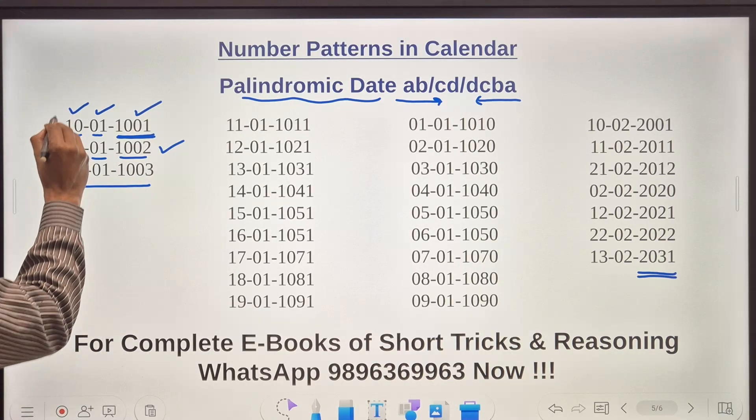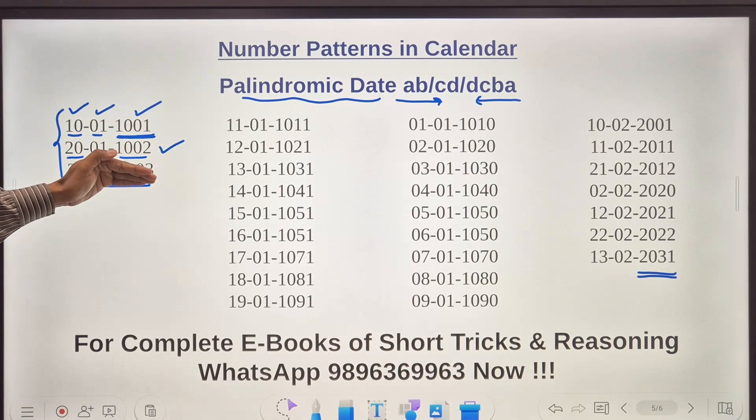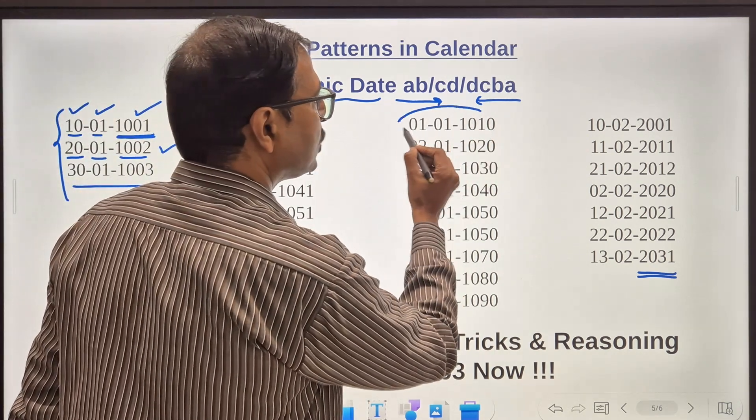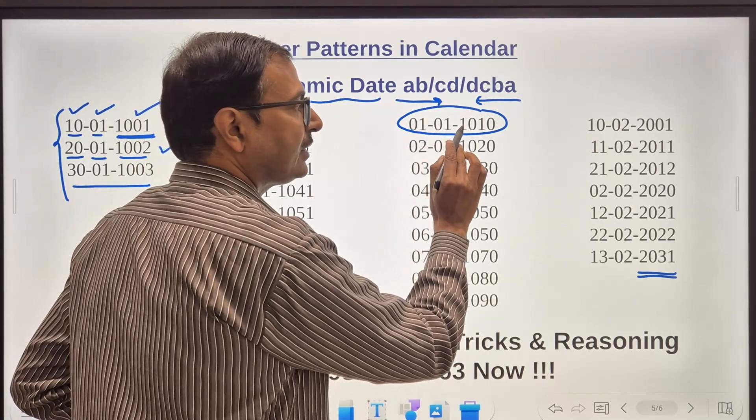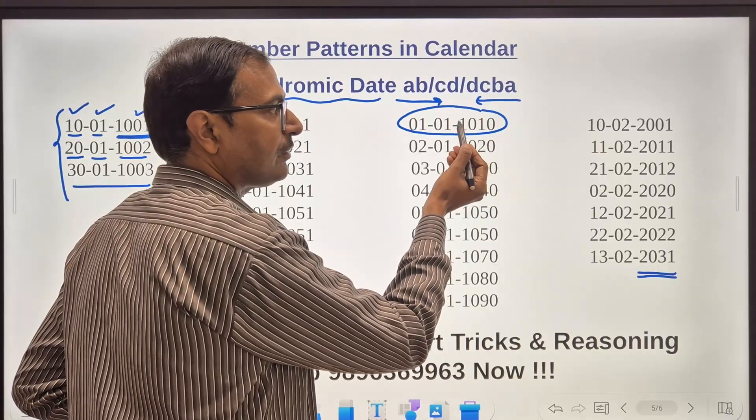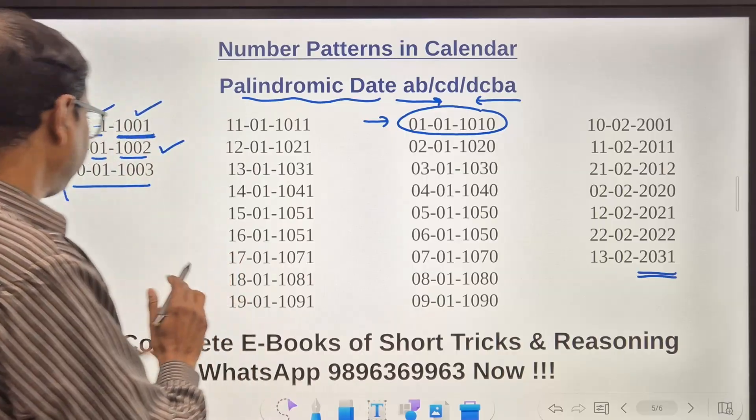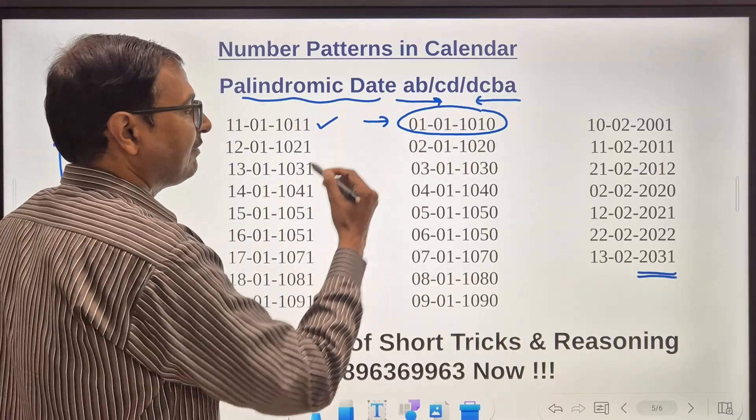Likewise in 1002 year you got this date 20th January 1002 and then 30th January 1003. These three dates were the palindromic dates when it comes to the year 1001, 1002, 1003. After that you have some dates here, see 1010, so first January 1010, read it from the other side 01-01-1010. So this is the palindromic date.